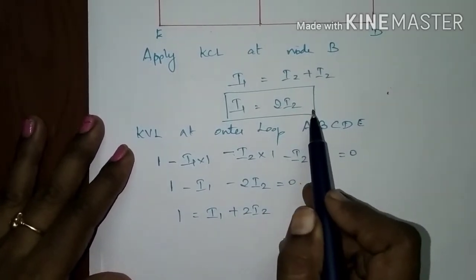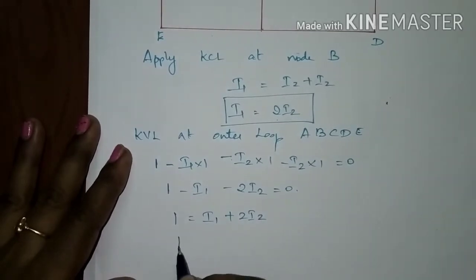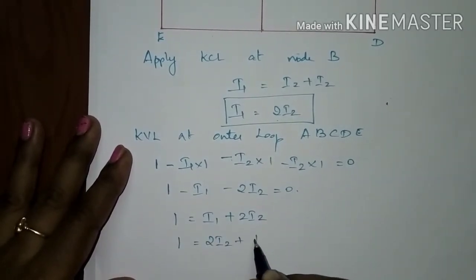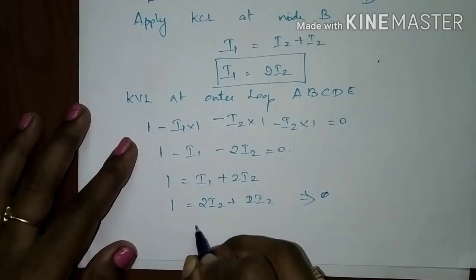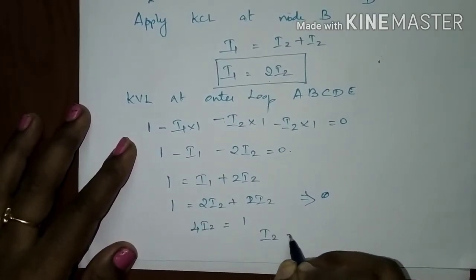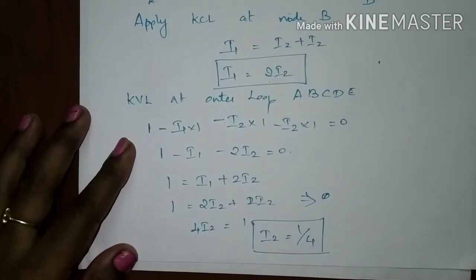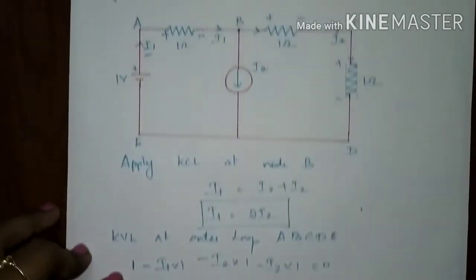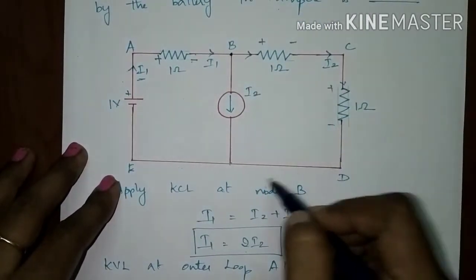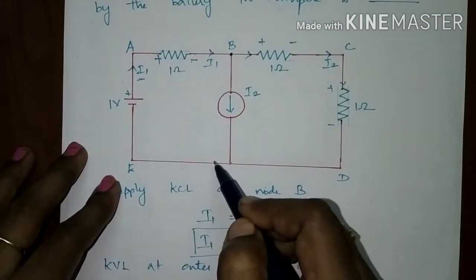We already found from KCL that i1 equals 2*i2. Substituting: 1 equals 2*i2 plus 2*i2, so 4*i2 equals 1, giving i2 equals 1/4. The value of the current i2 is 1/4 ampere. The current has been split and will join again at the node.